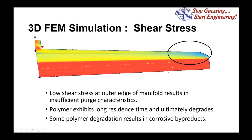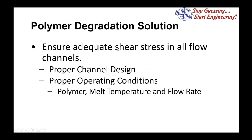Ensuring adequate shear stress in all flow channels is the main way to avoid polymer degradation — requiring proper channel design and proper operating conditions. If a channel is designed with proper shear stress at 500 pounds per hour but you're operating at 200–300 pounds per hour, the shear stress will be lower. Similarly, if a polymer change results in higher melt temperature, as seen with the extruder example, shear stress can also be lower and you're back to the same problem. We want adequate shear stress on all channel walls so they can be self-wiping.